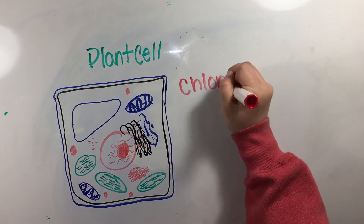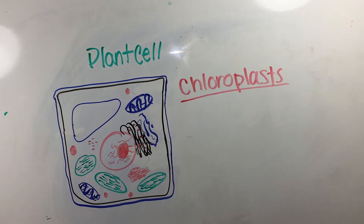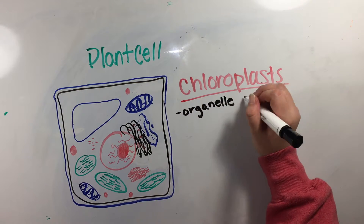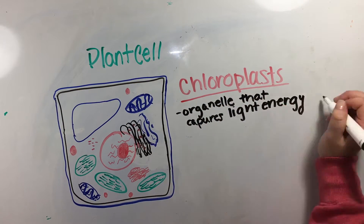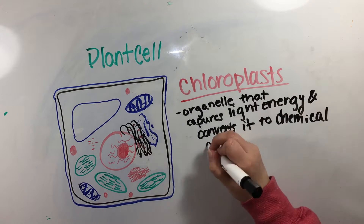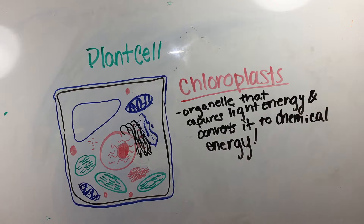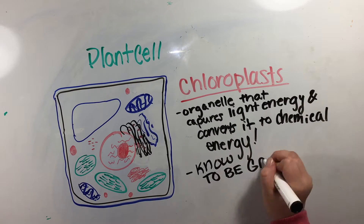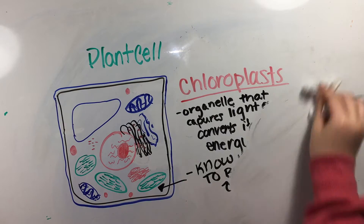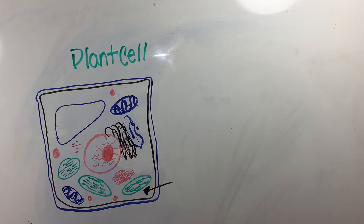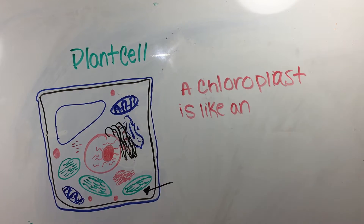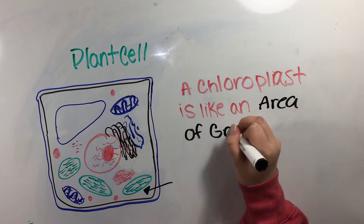A chloroplast is an organelle that captures energy from sunlight and converts it to chemical energy. The grass in the outdoor exhibits is like chloroplasts because they use the sun for energy to make food for some of the animals.